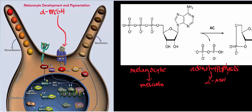Alpha-MSH ultimately ends up binding to the alpha-MSH receptor on a melanocyte. The melanocyte is a cell that has little arms sticking out called dendrites, and it's located in your skin. It's responsible for making melanin. There's a melanocyte-stimulating hormone receptor on its surface, and alpha-melanocyte-stimulating hormone binds there.